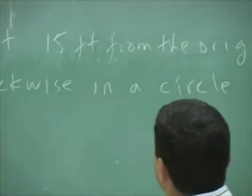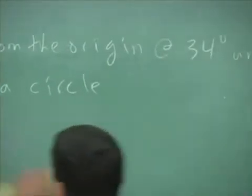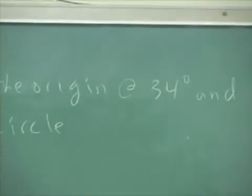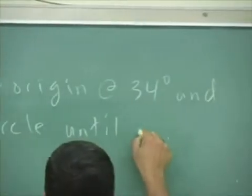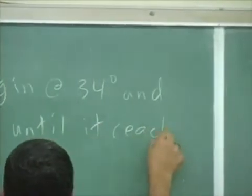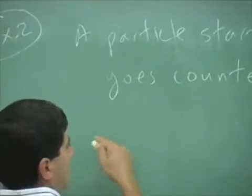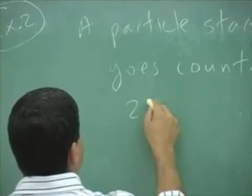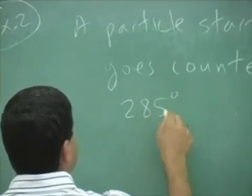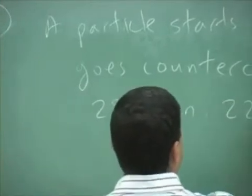So a particle starts out at 15 feet from the origin at 34 degrees and goes counterclockwise in a circle until it reaches 285 degrees in 22 seconds.